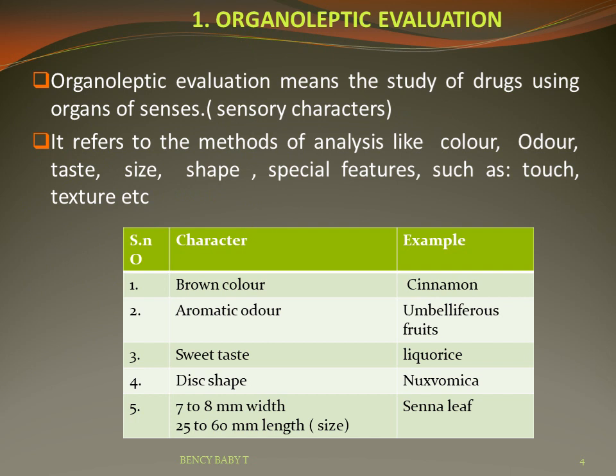Organoleptic or morphological evaluation refers to the study of drugs using the sense organs. The methods of analysis include color, odor, taste, size, shape, and special features like touch and texture. For example, cinnamon is brown in color, umbelliferous fruits have aromatic odor, licorice has sweet taste, cinchona has a fractured surface, Rauwolfia has a wavy shape, senna leaf has a specific structure, and nux vomica is disc shaped.